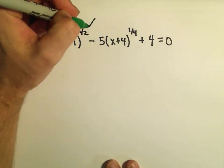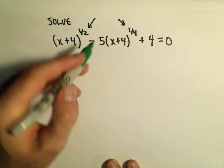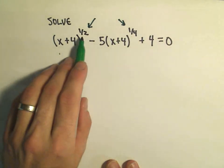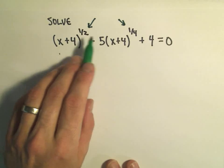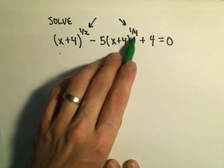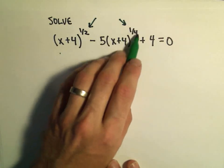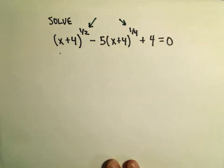Notice these exponents that we see. There's a one-half and there's a one-fourth. One-half is exactly two times one-fourth. Whenever that happens, whenever the exponent is twice as big as the other exponent, we can do this trick that we're about to do to do this problem.